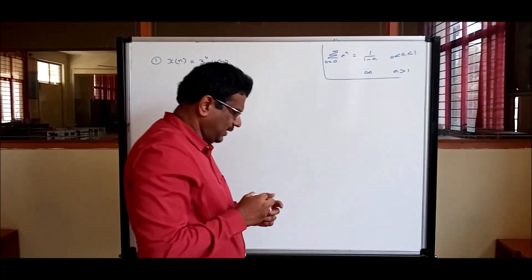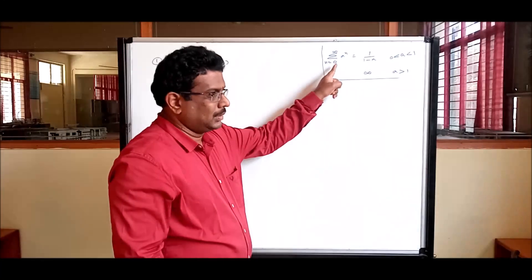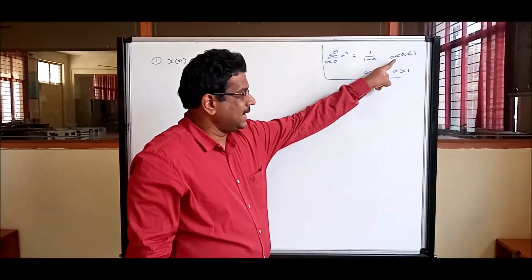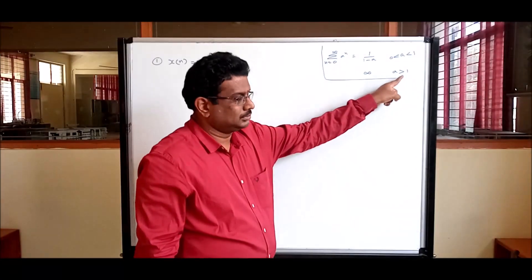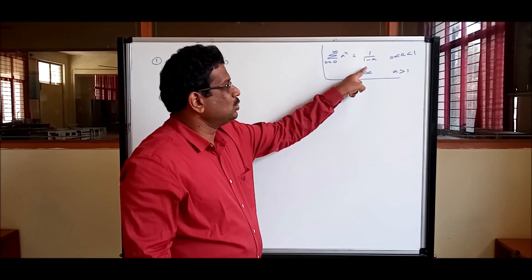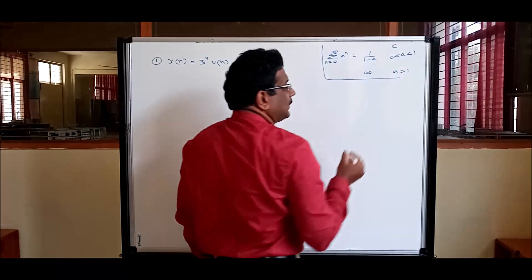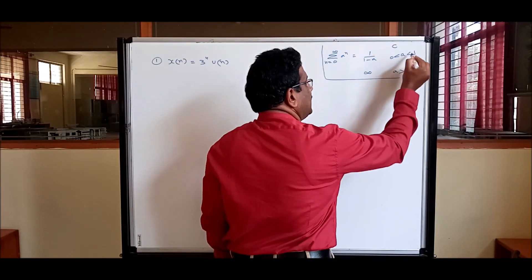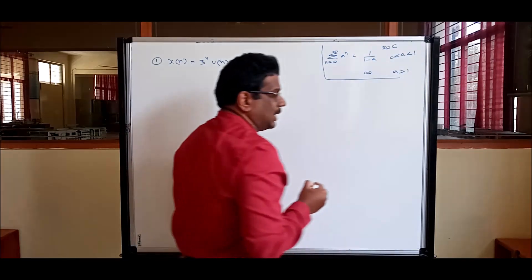One answer is infinity — diverging. The other is finite: 1/(1 - a) — converging. Your infinite series gives a finite result when a is fractional, and gives an infinite result when a is greater than 1. The converging region (where 0 < a < 1) is what we call the region of convergence.